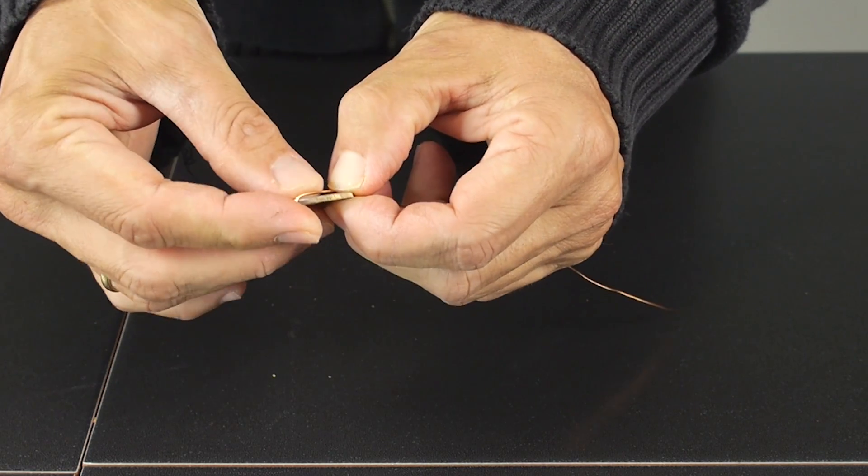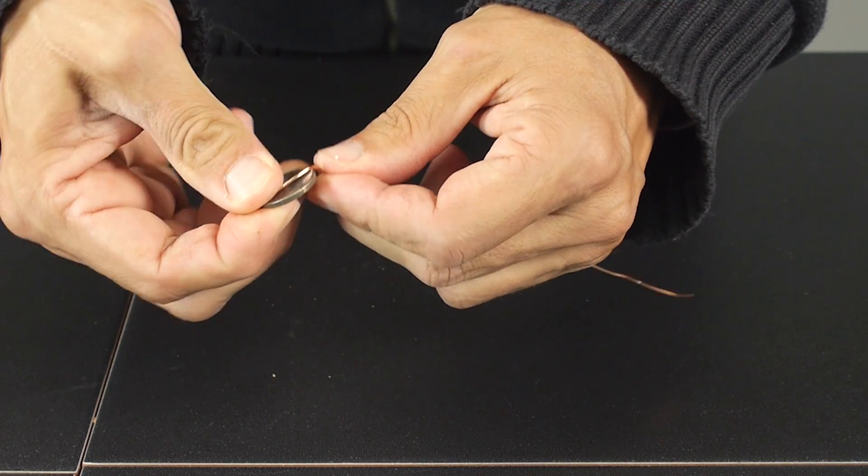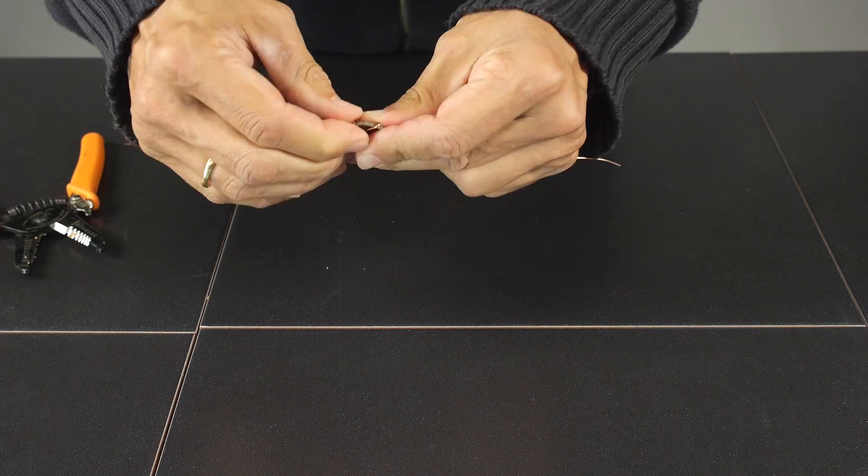Now we have to hold the coin with the wire. Bend it, and make a cross with the wire so that the coin is inside.